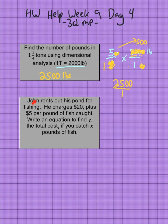Second problem: John rents out his pond for fishing. He charges $20 plus $5 per pound of fish caught. Write an equation to find Y, the total cost, if you catch X pounds of fish.